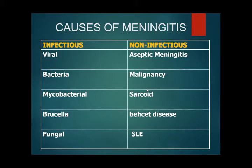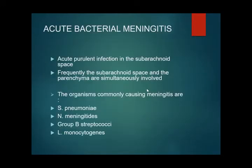Acute bacterial meningitis is an acute virulent infection in the subarachnoid space. Frequently the subarachnoid space and parenchyma are simultaneously involved. Organisms which commonly cause meningitis include Streptococcus pneumoniae, Neisseria meningitidis, Group B streptococci, and Listeria monocytogenes. Listeria is more common in infants, older adults over 50 years of age, the immunocompromised, and pregnant women.